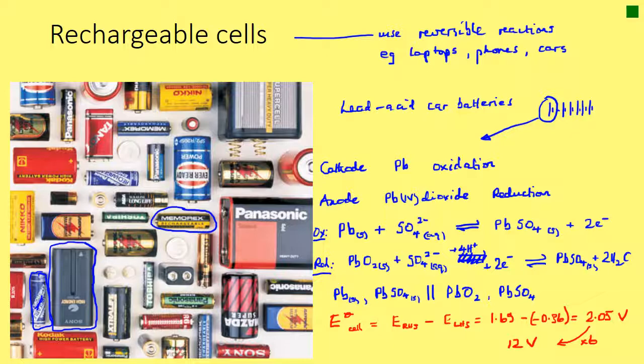Lead-acid cells are the ones used in car batteries. Car batteries are usually six cells connected in series — each contributing extra voltage to the total.